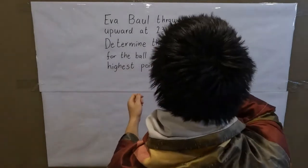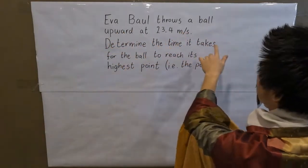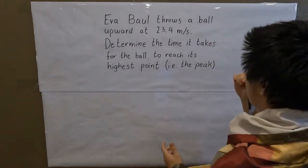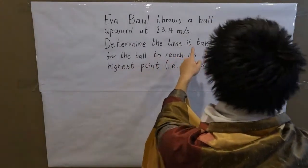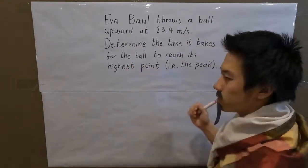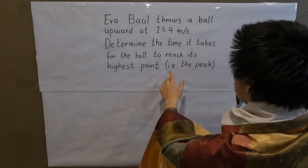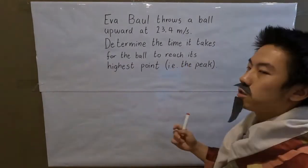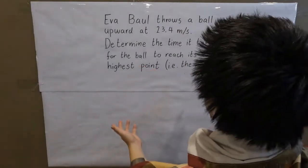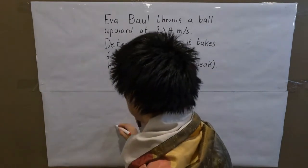Here is the question: 'Every ball throws a ball upward at 23.4 meters per second.' The question wants us to determine the time it takes for the ball to reach its highest point — i.e., to be precise, the peak. So when does it reach the peak? Fairly simple question. We first have to imagine the situation.